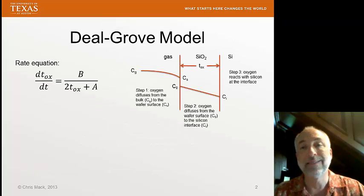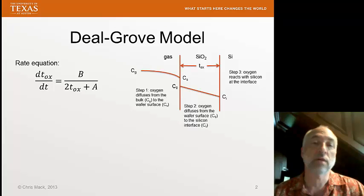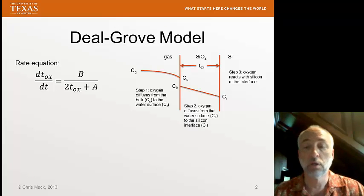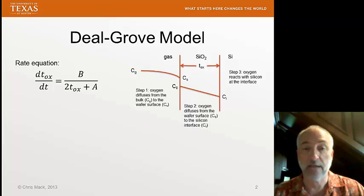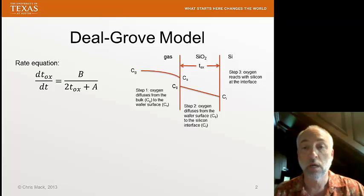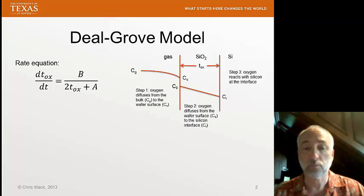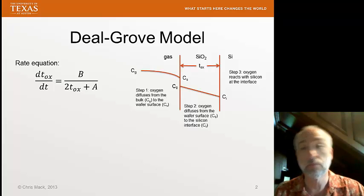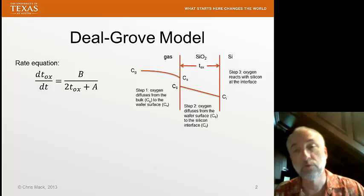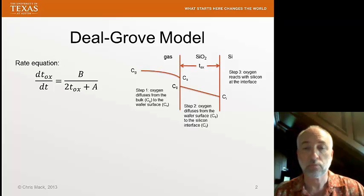Last time, we talked about the Deal-Grove model. We saw that there were three sequential flows of reactant. First, there was the flow of reactant from the bulk gas to the surface of the silicon dioxide film, a diffusion process. After that, oxidant — either oxygen or water — absorbs onto the surface following Henry's law, the solubility law. Then we have another diffusion step: the diffusion of that reactant through the oxide film.